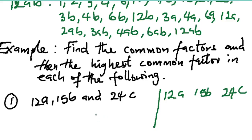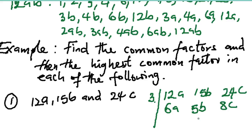We look for a number that can divide through all three terms. 1 can always divide, so we keep that aside. Can 2 divide? It divides 12 but not 15, so no. Let's try 3: 3 divides 12 to give 6a; 3 divides 15 to give 5b; 3 divides 24 to give 8c. Nothing else can divide through, and the letters cannot divide through either.